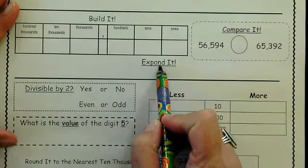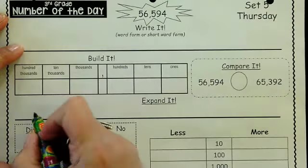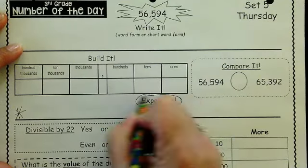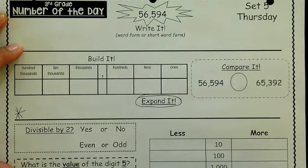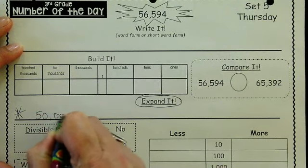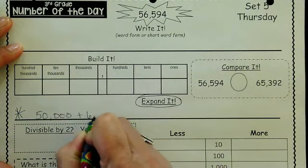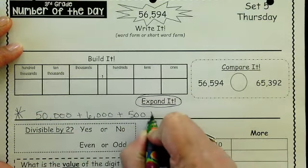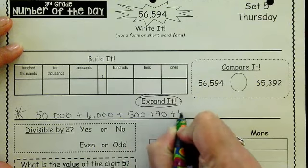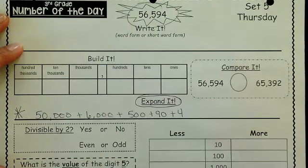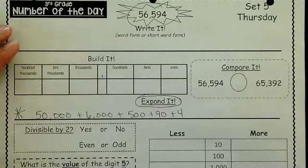When we get to expand it, some of us are forgetting to do this one. Please do not forget to expand it, which would be to write an expanded notation. For example, it would be 50,000 plus 6,000 plus 500 plus 90 plus 4. That is my expanded notation for 56,594.